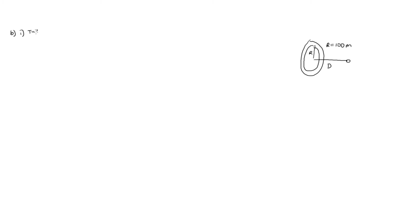In order to have an acceleration similar to the acceleration due to gravity, we need a centripetal acceleration for a person standing on the edge of the disk towards the center, which has the same magnitude as g. So we need our centripetal acceleration equal to g. We know the centripetal acceleration is given by v squared over r, or omega squared times r. From this we can work out omega, and we know that omega is related to the period through omega equals 2 pi over T.